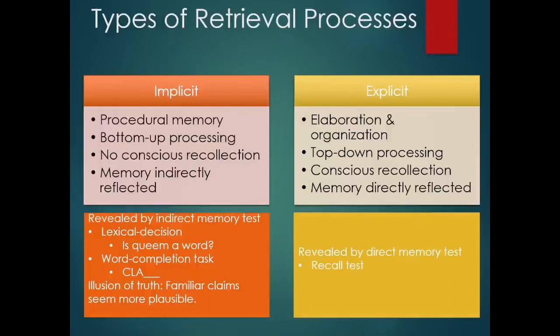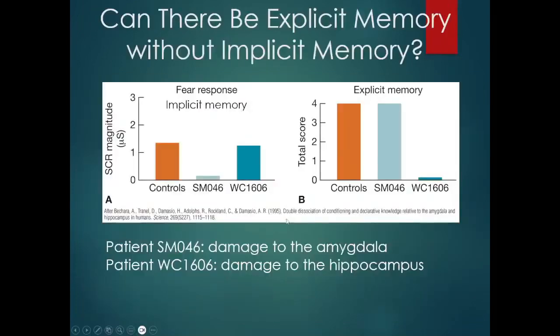So we can measure your explicit memory system with recall tests or recognition tests or rapid relearning something like that. Your explicit memory system would consist of all those things that you are aware that you know. The last thing I wanted to say about all of this is can there be explicit memory without implicit memory?